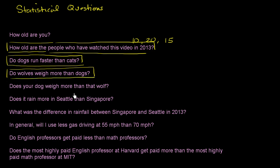Does your dog weigh more than that wolf? We're assuming we're pointing at a particular wolf. Now we're comparing a particular dog to a particular wolf. We can put each on a weighing machine and come up with an absolute answer. There's no variability in this dog's weight or this wolf's weight at the moment we weigh them. This is not a statistical question.